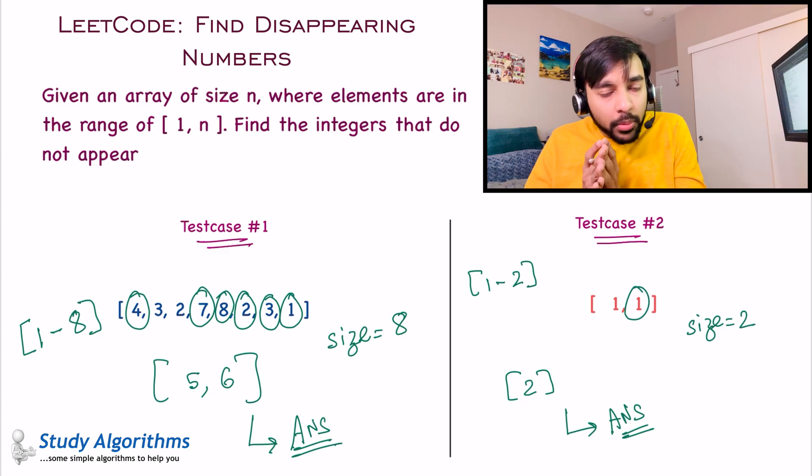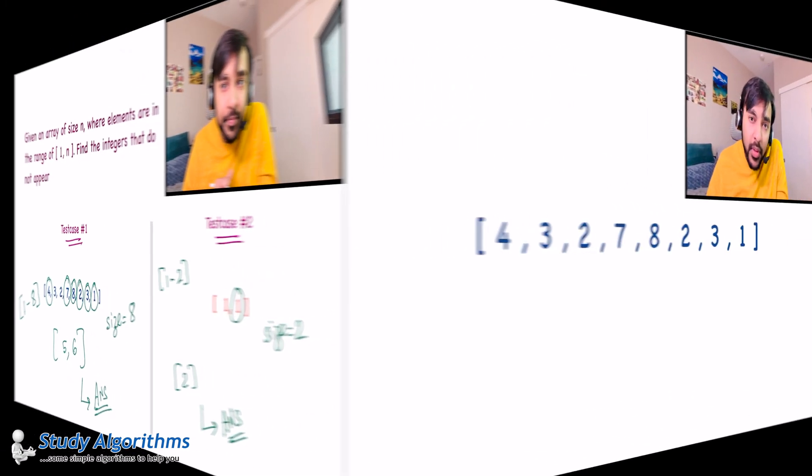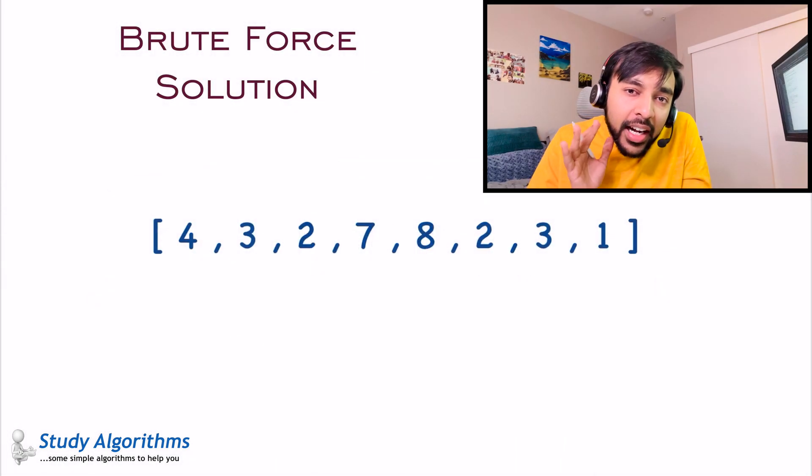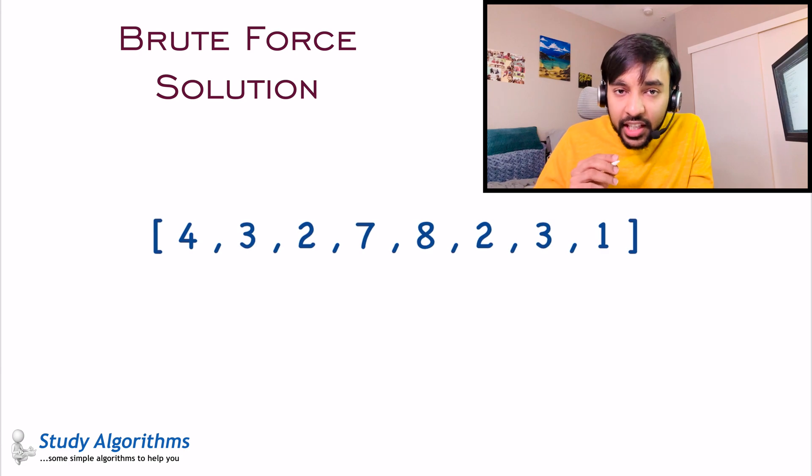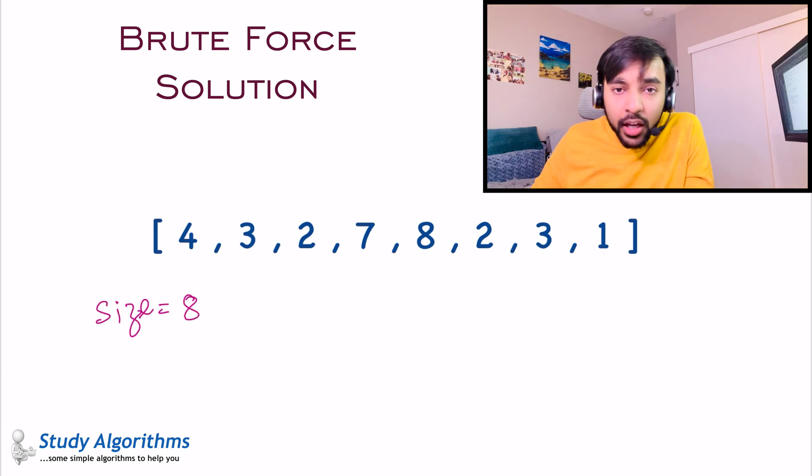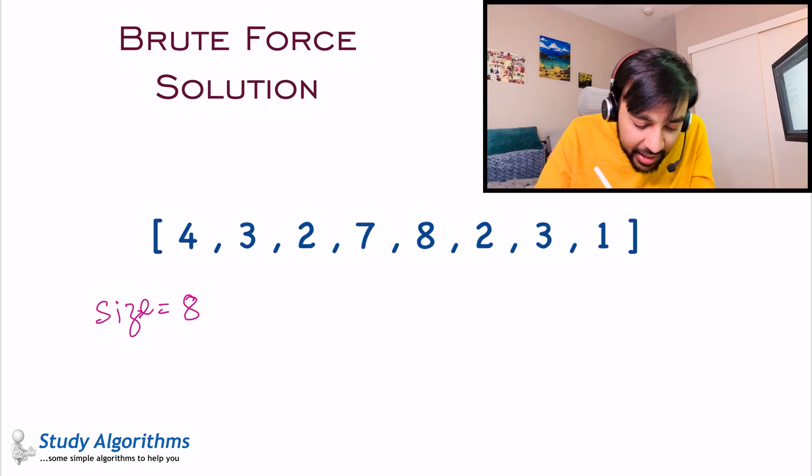Now if this problem statement is clear to you, feel free to try it out on your own. Otherwise, let's see how we can approach this problem step by step. So let's say this is a sample array in front of you and you have to find the disappearing numbers. What is the most straightforward approach that you can think of? First, you can start with finding the size of this array. The size of this array is 8. So this means that this array will have elements from 1 to 8.